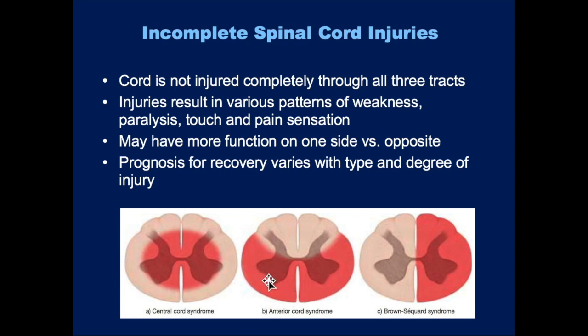Anterior cord syndrome is when the front part of the spinal cord is injured, which injures the sensory motor tracks in that portion. What's interesting is the posterior part of the cord, which is not injured, carries light touch — so light touch remains intact, they can feel light touch. But what they can't feel is pain, and they might lose motor function. So maybe they can't move their legs, and you pinch their leg and they can't feel it, but if you gently touch the skin on their leg, they would be able to feel it.